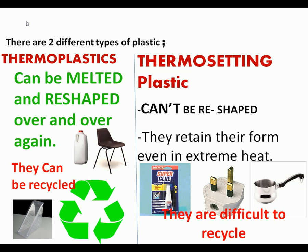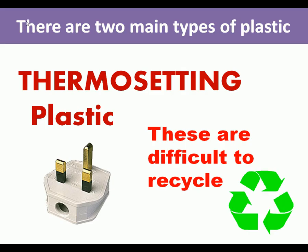There are two major types of plastics. Thermoplastics can be melted and reshaped over and over — they can be easily recycled. Thermosetting plastics, once heated and cooled, retain their form and are difficult to recycle; they can be recycled but it is much more difficult.